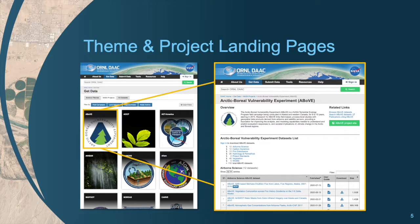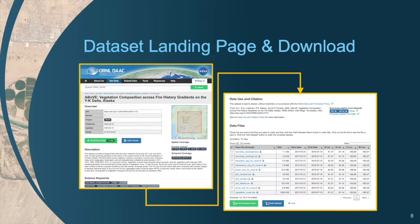On the left you see the NASA project tab found on the Get Data page. Each science theme and project has a landing page that lists respective data. On the right you see the landing page of the Arctic Boreal Vulnerability Experiment. Each dataset also has a landing page — on the left you see the top of a dataset landing page, and on the right you see a table of data files found near the bottom, including a filter you can use to search for data within the dataset.